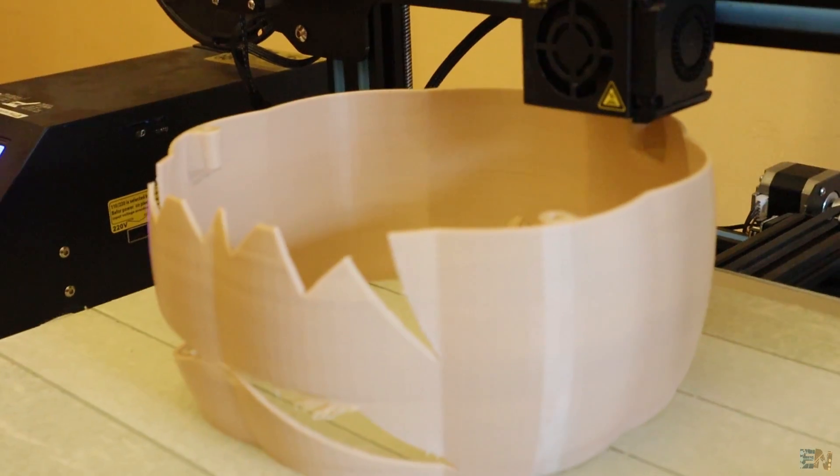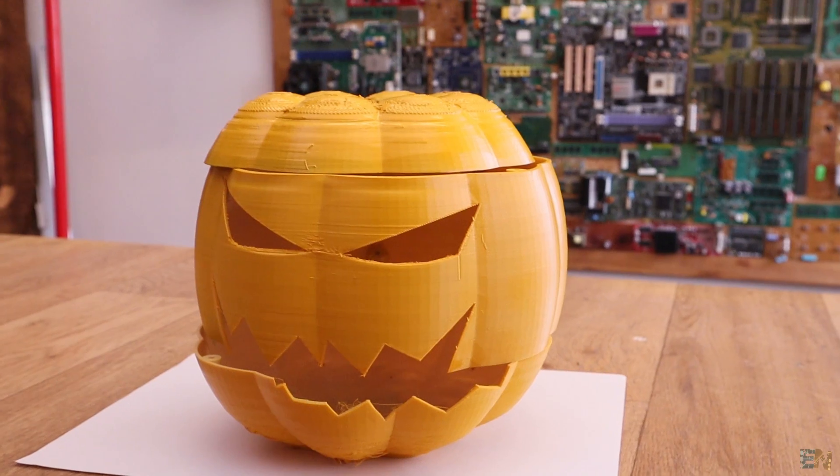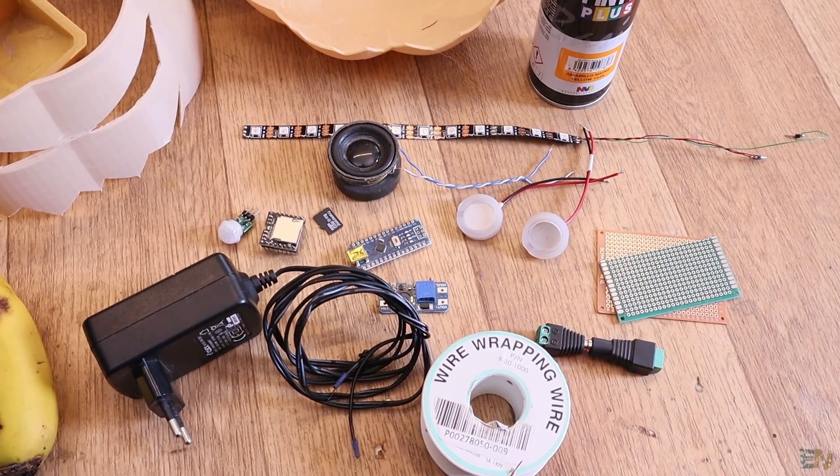So after I made a simple design and divided it in a few parts, 3D printed and gave it a paint job, I had a cool looking plastic pumpkin. But I wanted to add some electronics, of course.